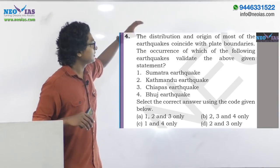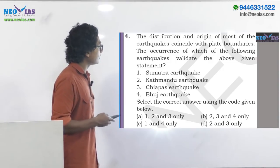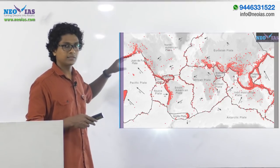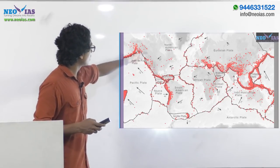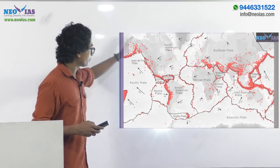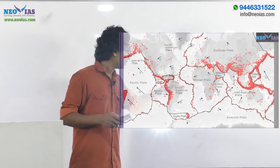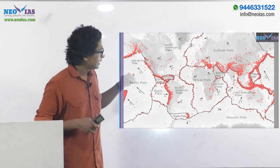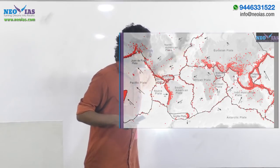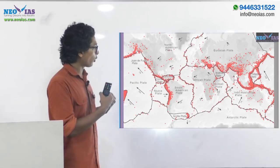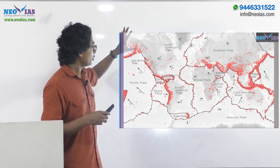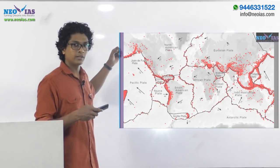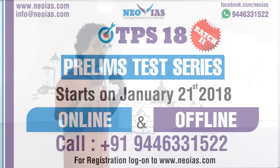Let us have a look at the earthquake distribution and the plate boundaries. You can see different plates and the red dots represent the distribution of earthquakes. The Pacific plate is converging with the North American plate and the entire region is prone to earthquakes, plus they are converging with the South American plate as well as the divergent plate boundaries of the North Atlantic ridge. The Indo-Australian plate converging with the Eurasian plate makes the Himalayan-Alpine belt region heavily prone to earthquakes. Throughout the plate boundaries, earthquakes are distributed.